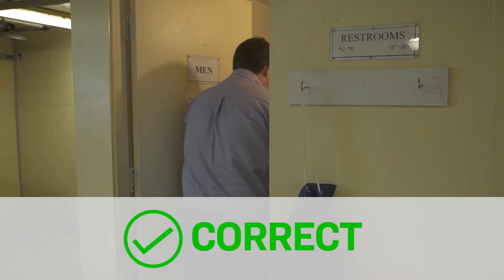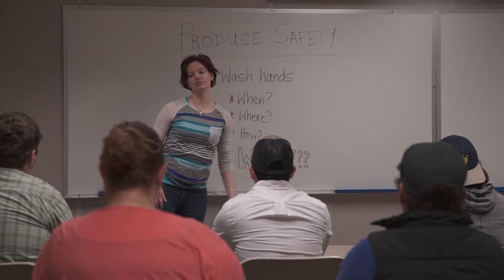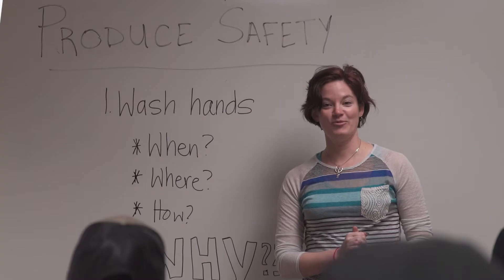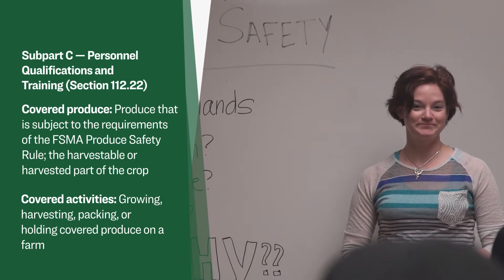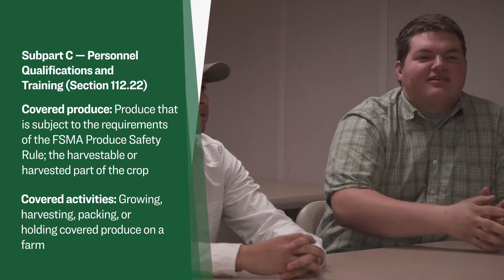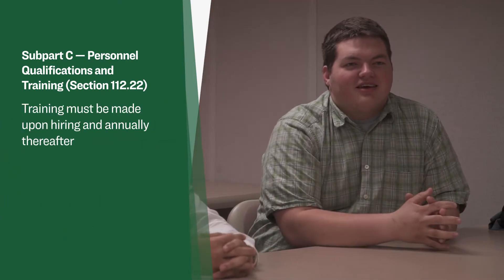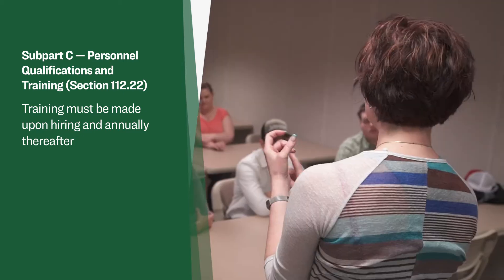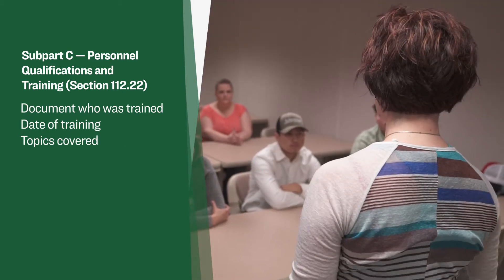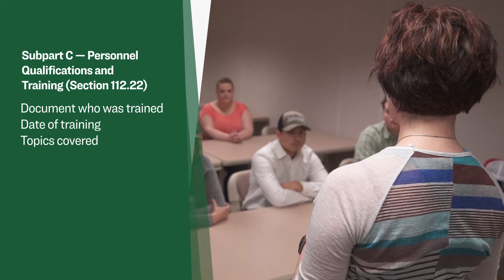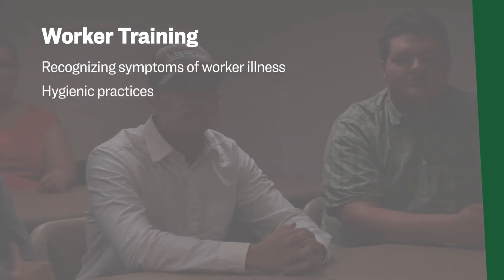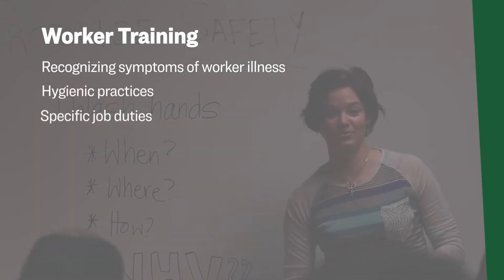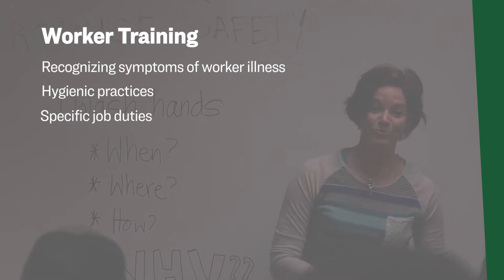One of the best ways to increase knowledge and awareness of the impact of pathogens on and off the farm is through ongoing employee training. It is required that everyone who handles covered produce during covered activities or supervises such activities must receive training upon hiring and annually thereafter. Training must be documented as to who was trained, date of training, and topics included. Worker training must include recognizing symptoms of worker illness, hygienic practices for all personnel and visitors, and specific job-related training.